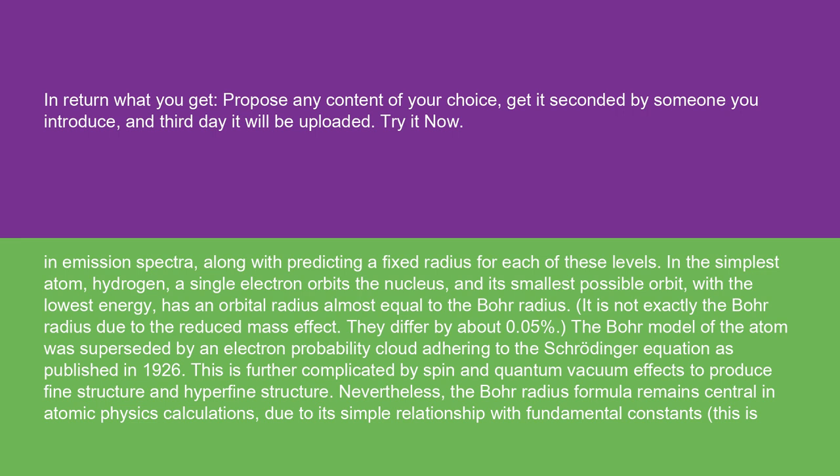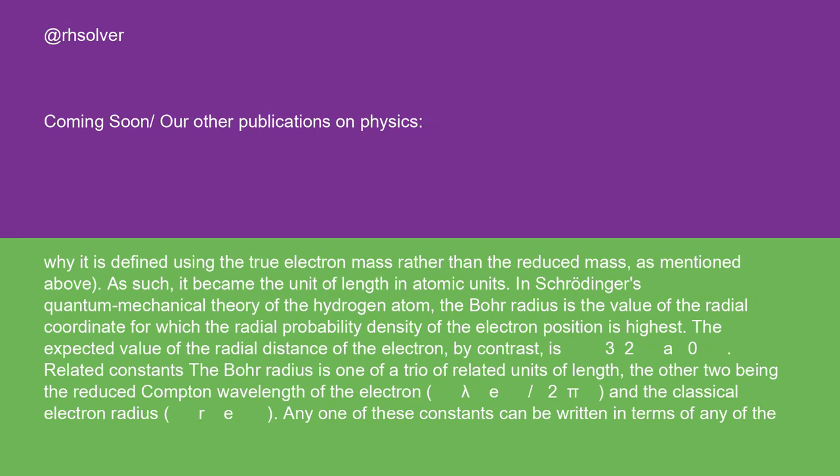Nevertheless, the Bohr radius formula remains central in atomic physics calculations due to its simple relationship with fundamental constants. This is why it is defined using the true electron mass rather than the reduced mass, as mentioned above. As such, it became the unit of length in atomic units. In Schrödinger's quantum mechanical theory of the hydrogen atom, the Bohr radius is the value of the radial coordinate for which the radial probability density of the electron position is highest.